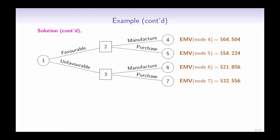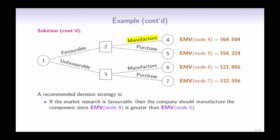Now we have the expected payoff at each outcome node, so we can recommend a decision strategy. If the market research is favorable, then the company should manufacture the component, since the expected payoff at node 4 is greater than the expected payoff at node 5.